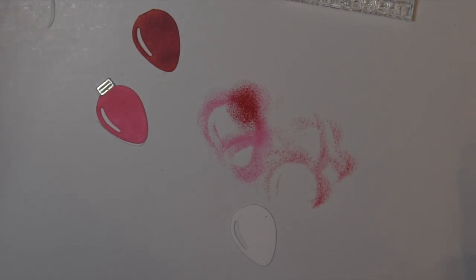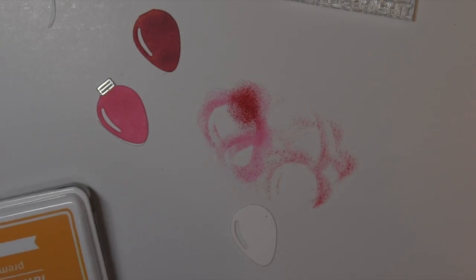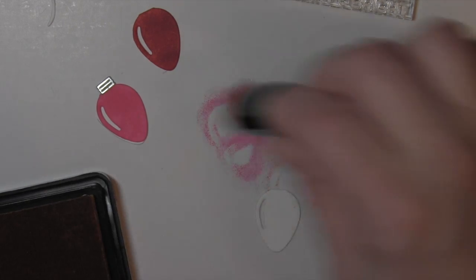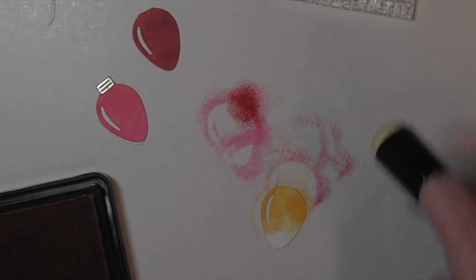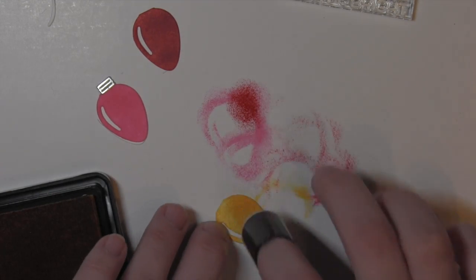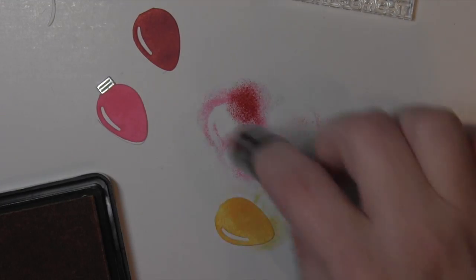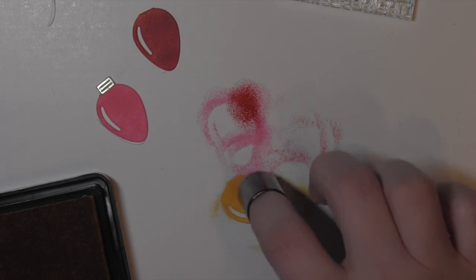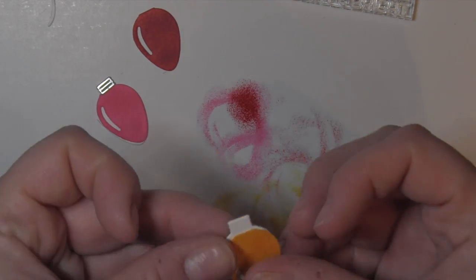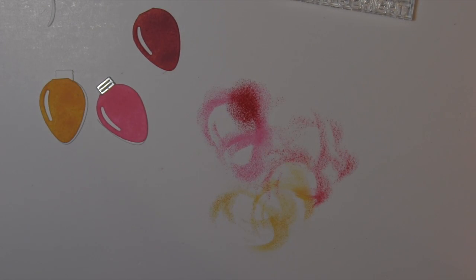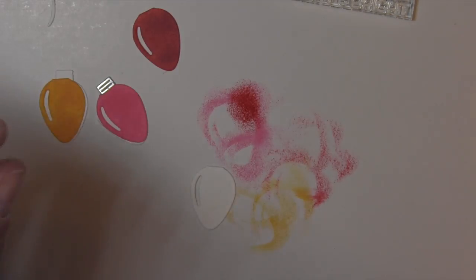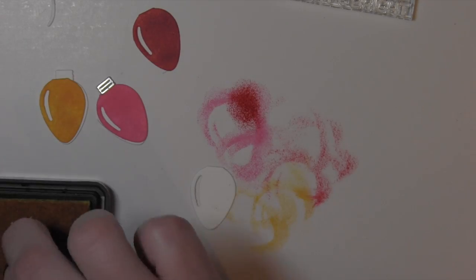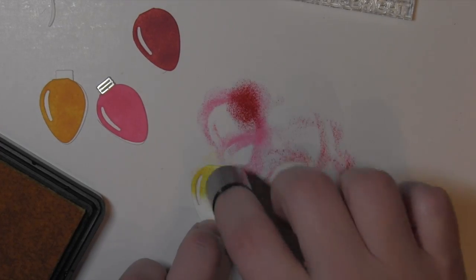I used the plastic flamingo ink for the pink light bulb, lobster for the red. Now I'm using carrot for my orange light bulb. Sunflower is going to be for the yellow one. Freshly cut grass will be for green. And then fish tank will be for the blue. So I'm just going to keep pouncing on this ink.